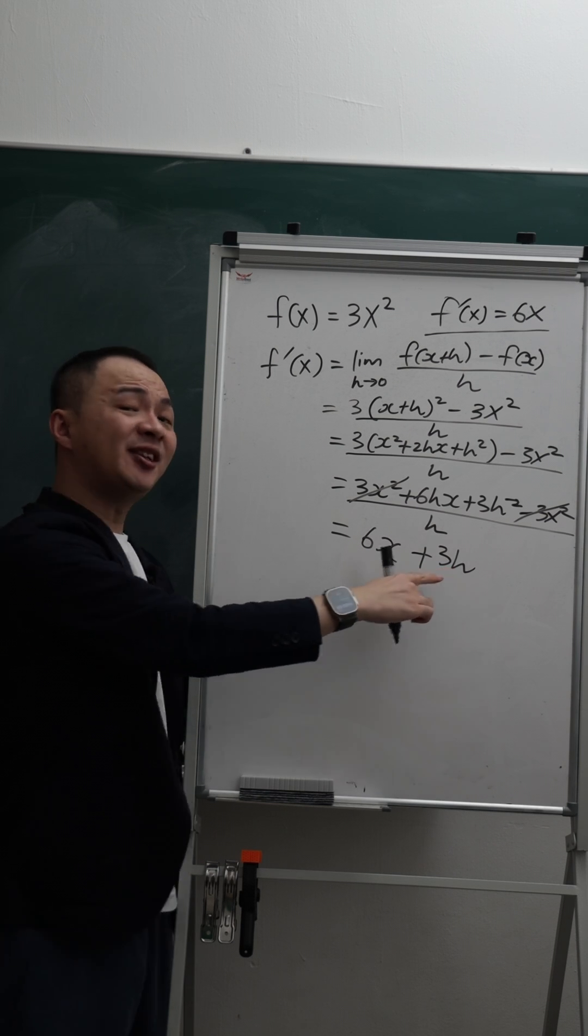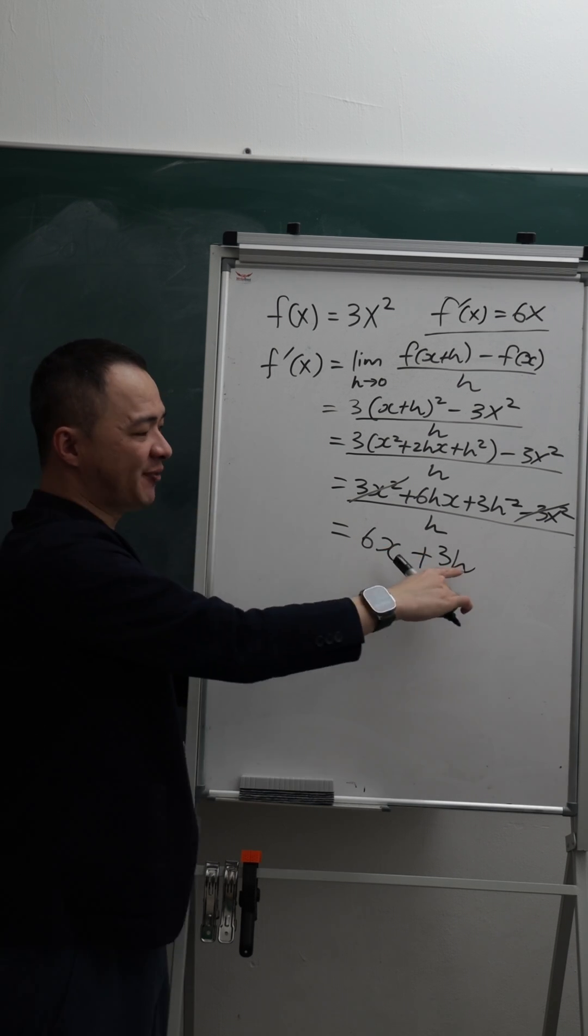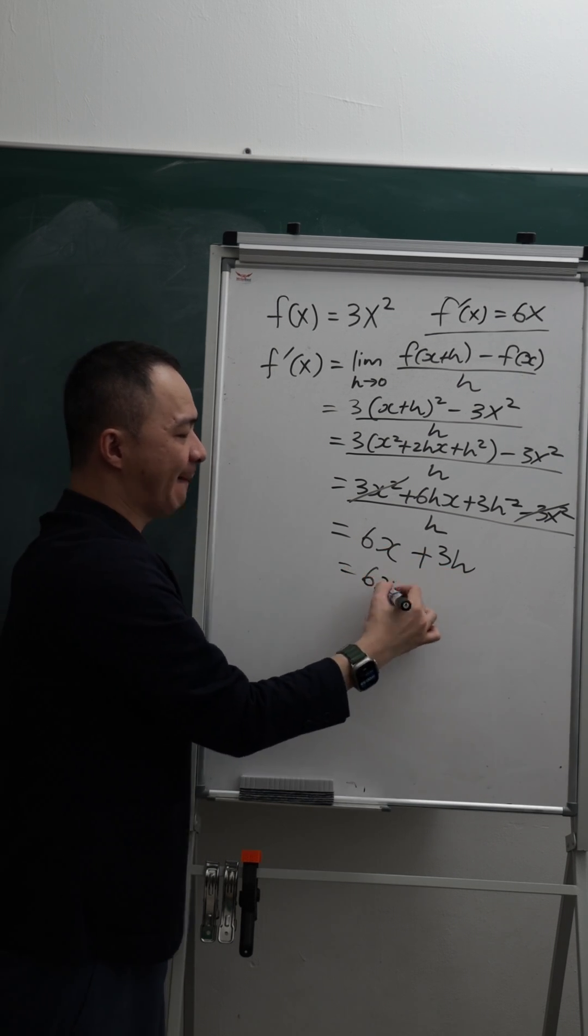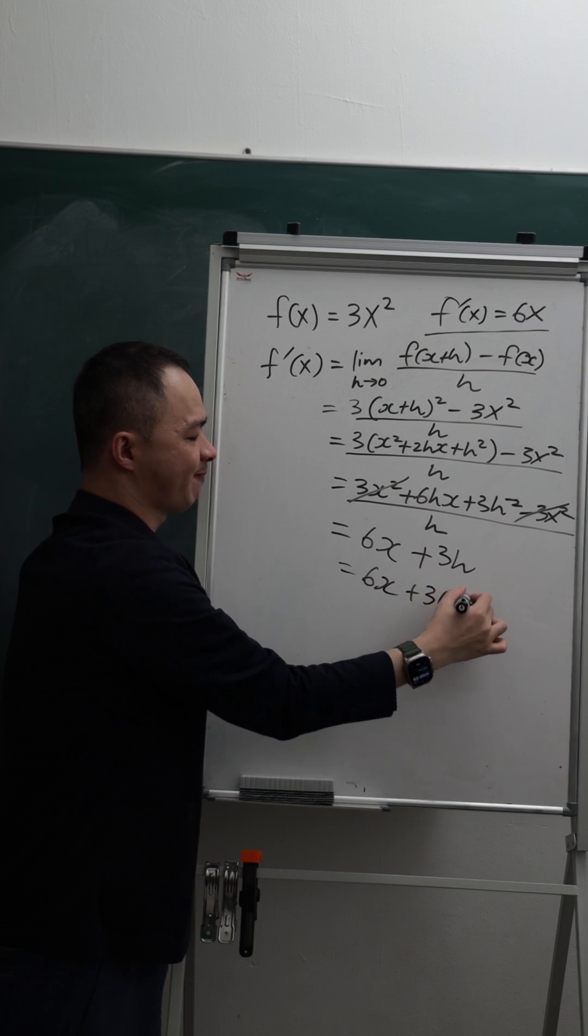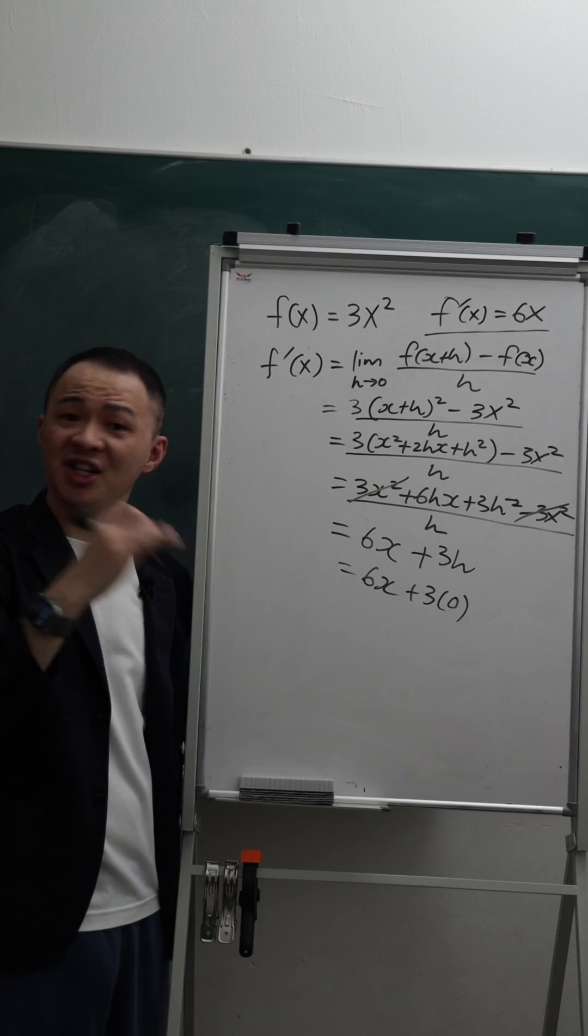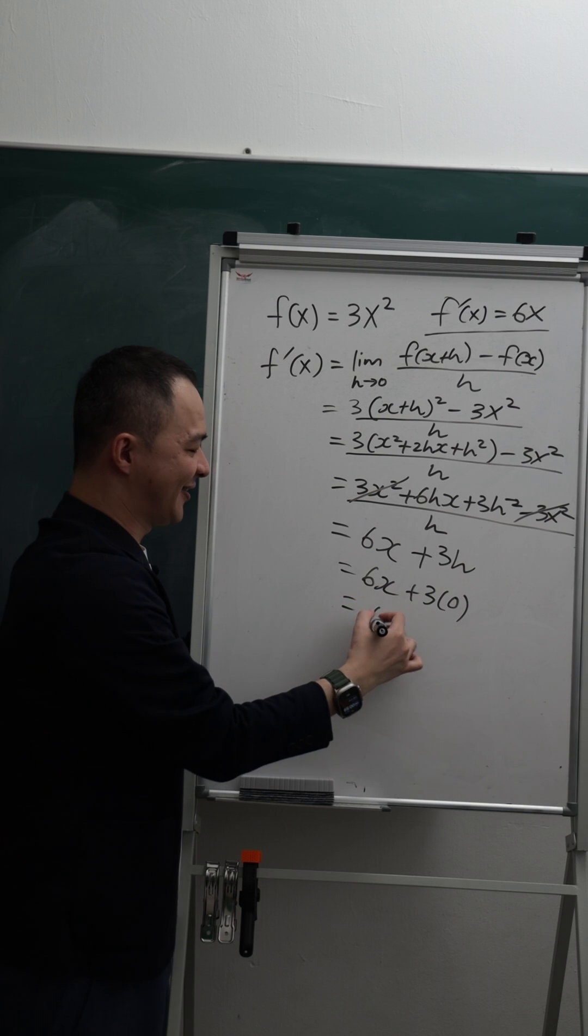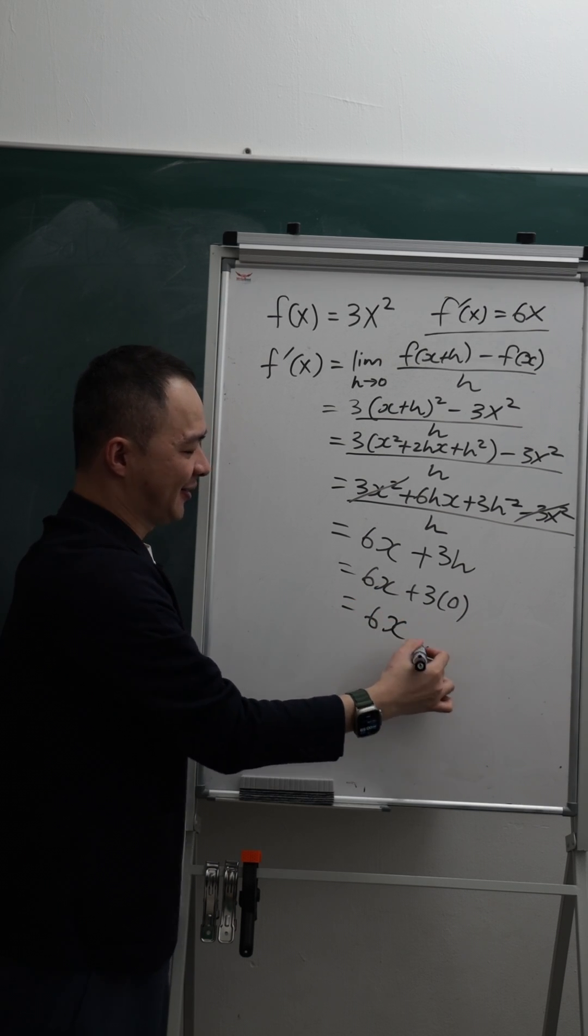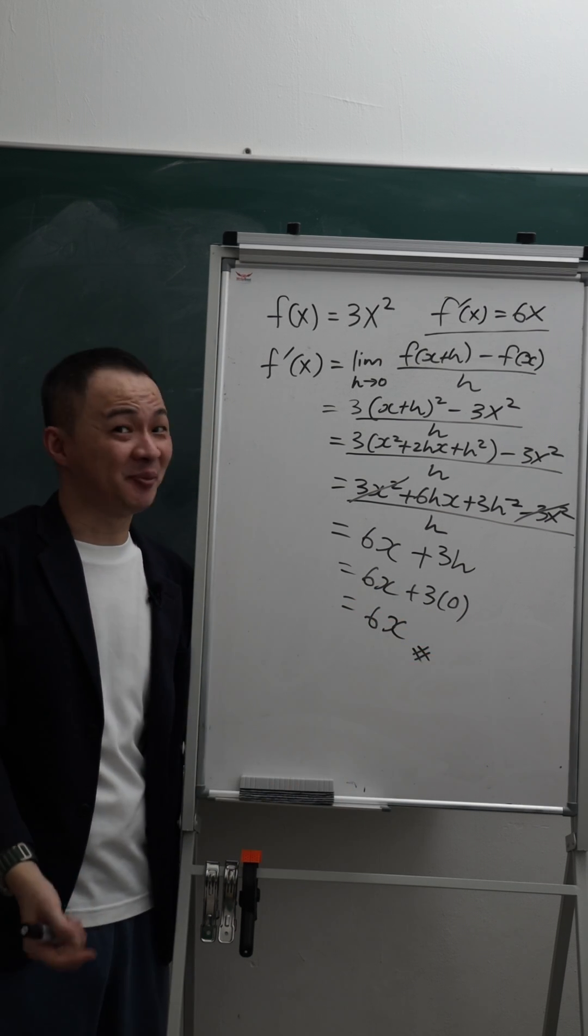Remember what I said? We need to make h become 0. So this is 6x + 3(0). Because the limit makes h become 0. So my final answer is 6x. It's not too bad, isn't it?